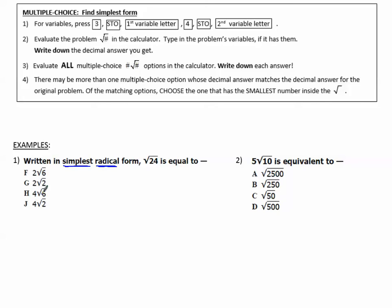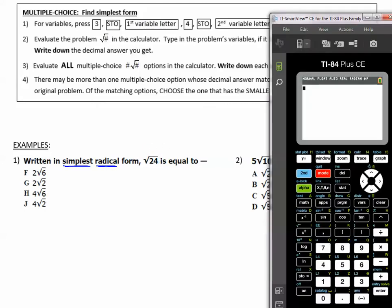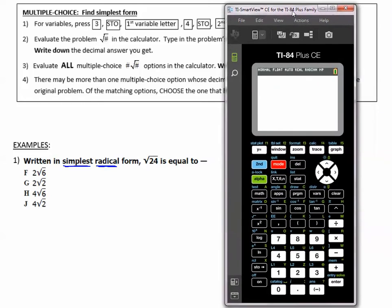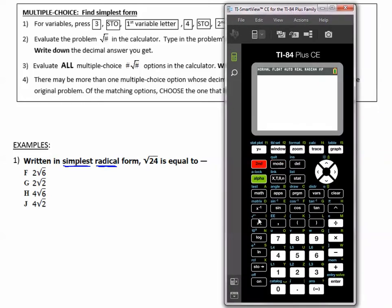Now while these are multiple choice answers, we don't need to store any variables because we don't have any variables. We're simply going to type this into the calculator. I'm going to type square root, which is second and then the x squared button, and then 24. Then I'm going to write down lots of digits of what I see here, like 4.898979. As many as I can.